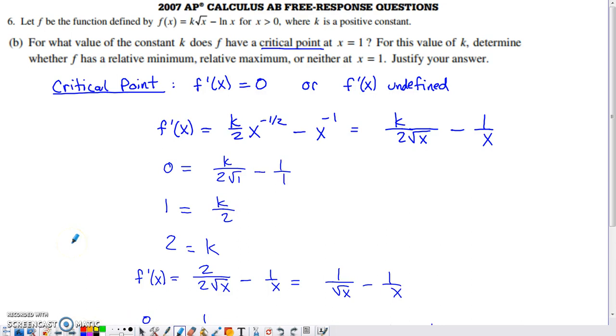And in part B, they ask us for what value of k does f have a critical point at x equals one. It goes on to say, for that value of k, determine if you have a max, a min, or neither at that x, and then, as always, justify your answer. So the line of thinking here would need to be, well, a critical point happens for one of two reasons. Either f prime of x is equal to zero, or f prime of x is undefined at a value that's in the function's domain.